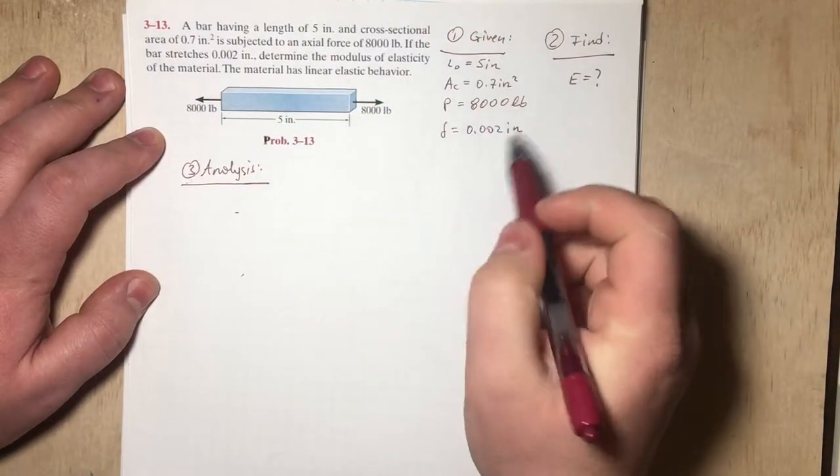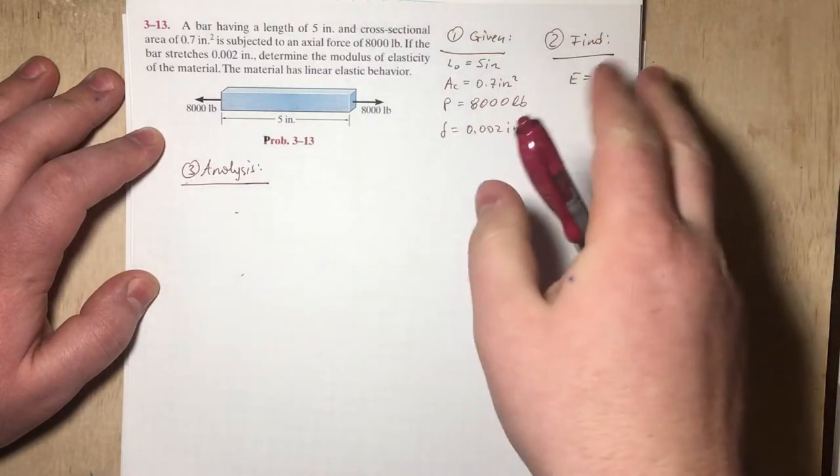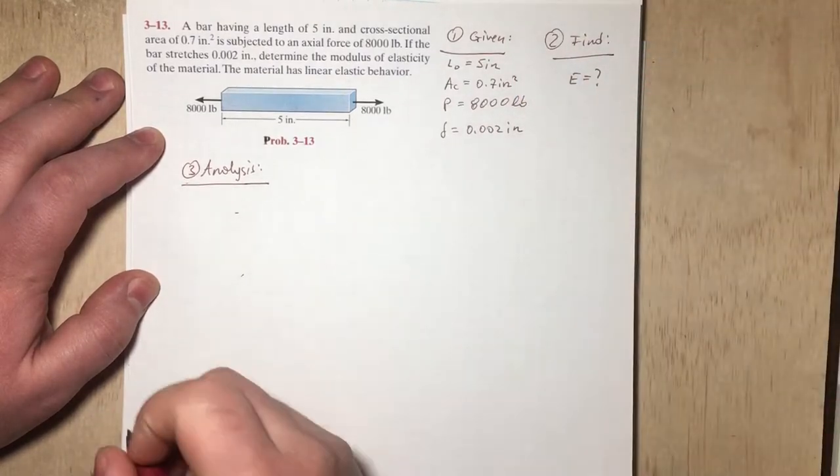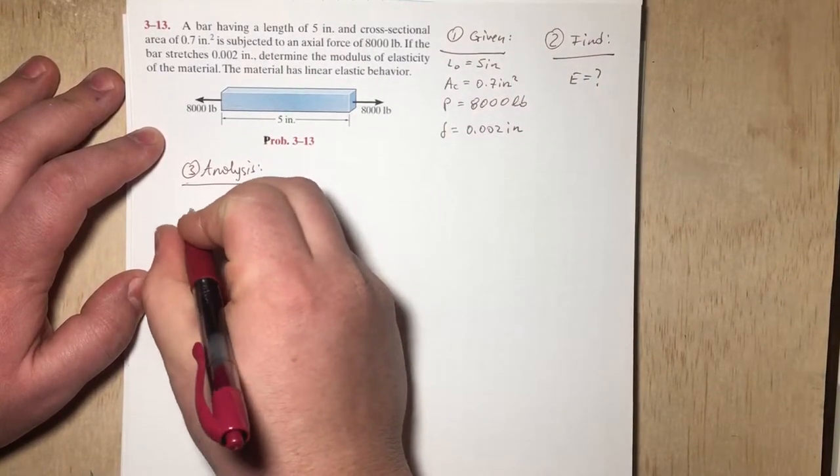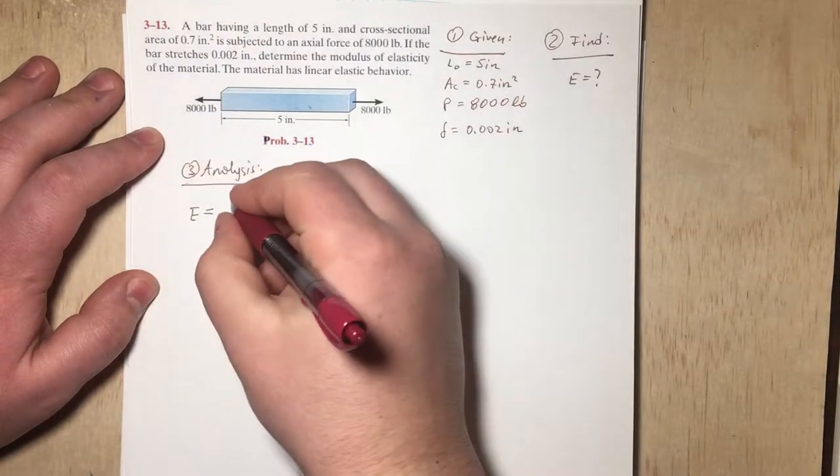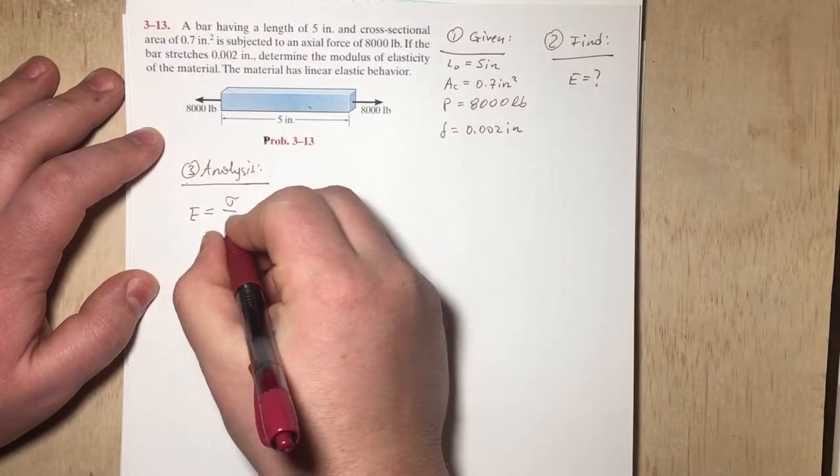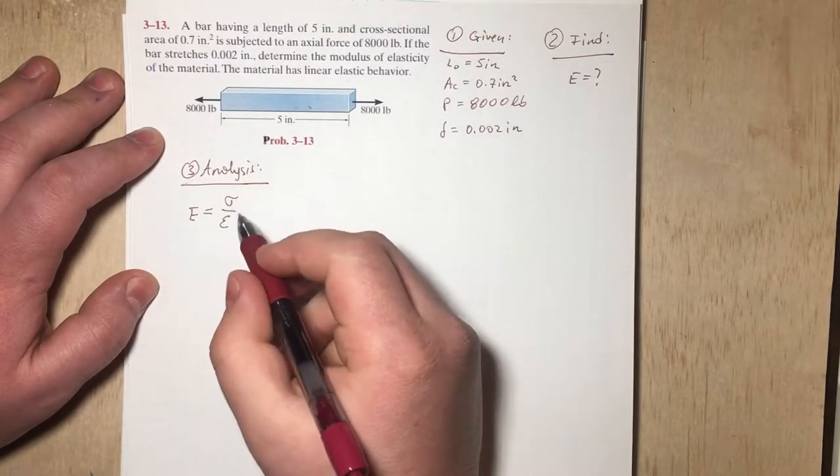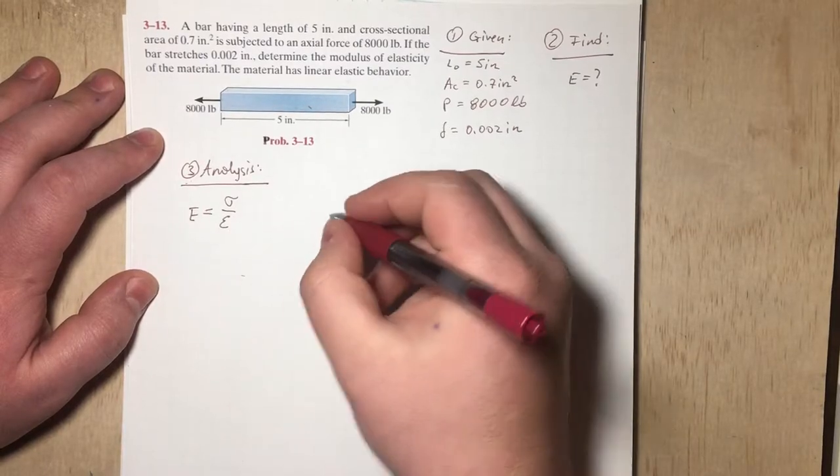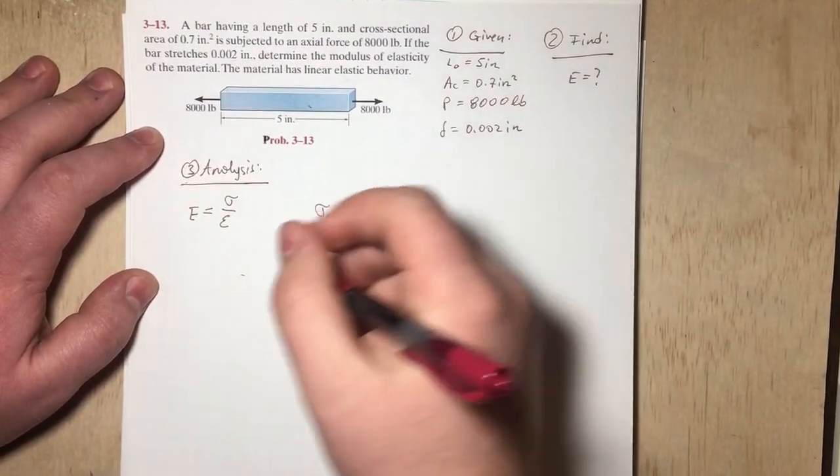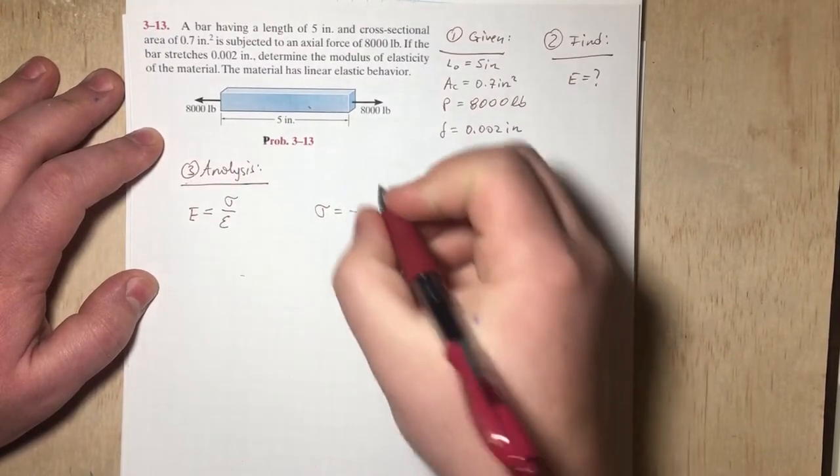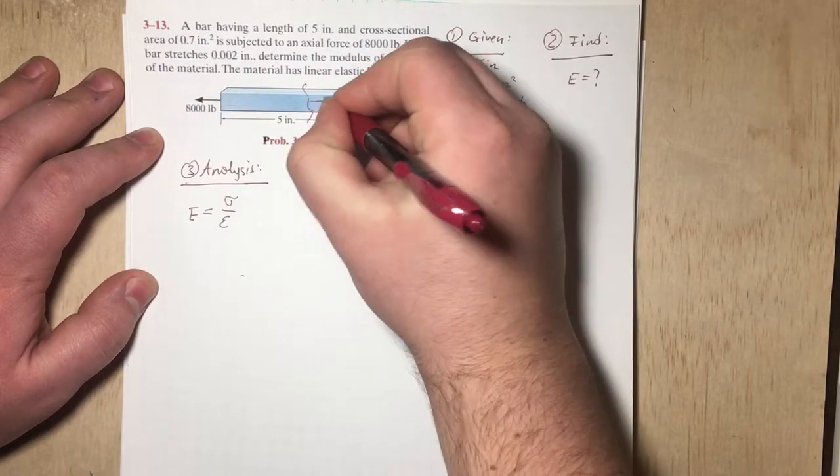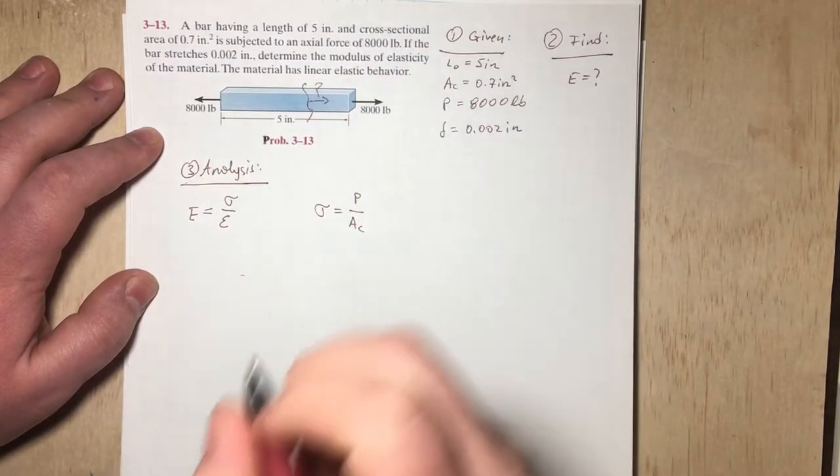So we need to come up with a relationship between our given and find. We need to figure out how we can use what's given to find what we're asked. Our ultimate goal is finding the modulus of elasticity, which by definition is sigma over epsilon, which is strain. So stress over strain. We're not given sigma or strain directly, but we can calculate that because we know that sigma, which is stress, is the internal force over cross-sectional area. And our internal force is simply going to be P. So we're actually given that.